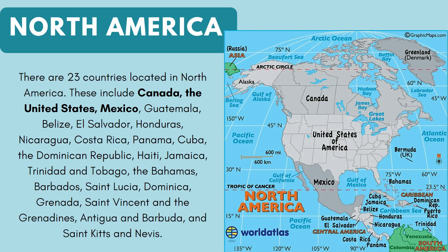Looking at a map of North America, there are in fact 23 countries that are part of North America. The three most commonly thought of — shown in bold — are Canada, the United States, and Mexico. But North America also includes Guatemala, Belize, El Salvador, Honduras, Nicaragua, Costa Rica, Panama, Cuba, the Dominican Republic, Haiti, Jamaica, Trinidad and Tobago, the Bahamas, Barbados, St. Lucia, Dominica, Grenada, St. Vincent and the Grenadines, Antigua and Barbuda, and St. Kitts and Nevis. We're really going to focus on the larger countries of Canada, the United States, and Mexico to begin with, but we'll take a look at some of the other countries too.